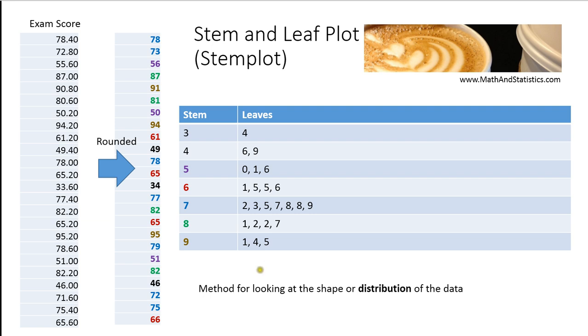So let's build this from start to finish. I know that my data is going to be grouped by the first number of all the possible data values I have. So I'm going to need a 3 for a stem, I'm going to need a 4, a 5, a 6, 7, 8, and 9.